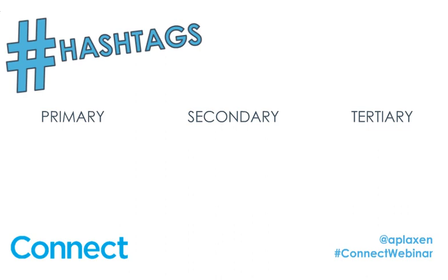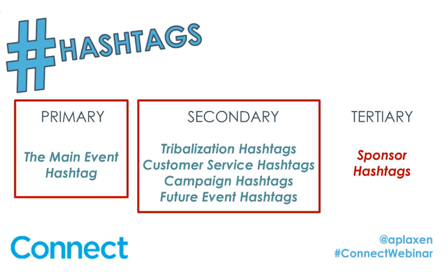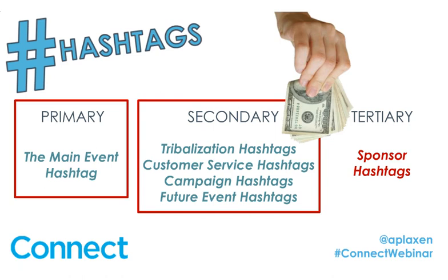It all starts with a hashtag. Most people don't realize that for an event there are many different types of hashtags. You have primary hashtags, which are the main event hashtags. You have secondary hashtags, which could be a tribalization hashtag, a customer service hashtag, or the hashtag for a future event. And then you have tertiary hashtags — those that no one really pays attention to. Unfortunately, those are often the hashtags your sponsors create; they'll use them with your main event hashtags, but no one is really actively using them. So what you want is for your sponsors to be attached to a primary or secondary hashtag — that's where the value comes in.